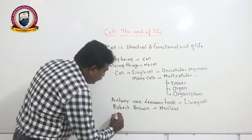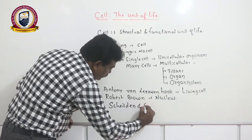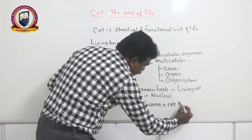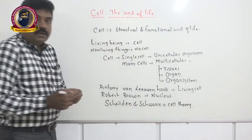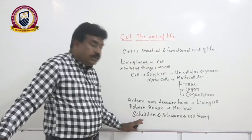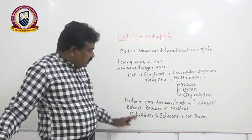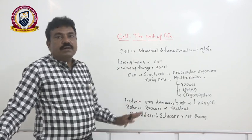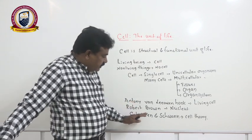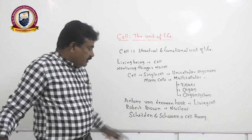Later, two eminent scientists — Schleiden and Schwann — proposed cell theory. Schleiden was a German botanist who explained that all plants have a special unit called plant cells, and all plant cells together form the plant body. Hence, the plant body is structurally and functionally organized with the basic unit, the cell.